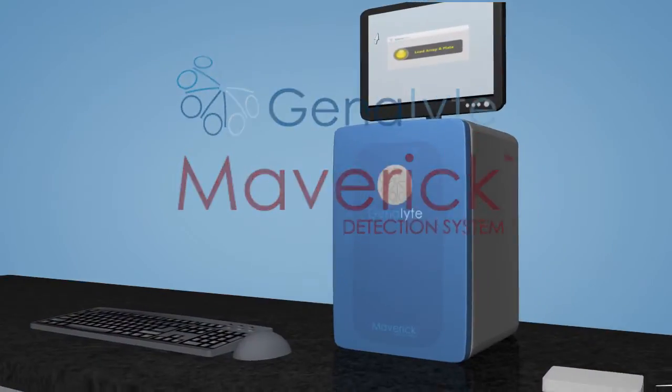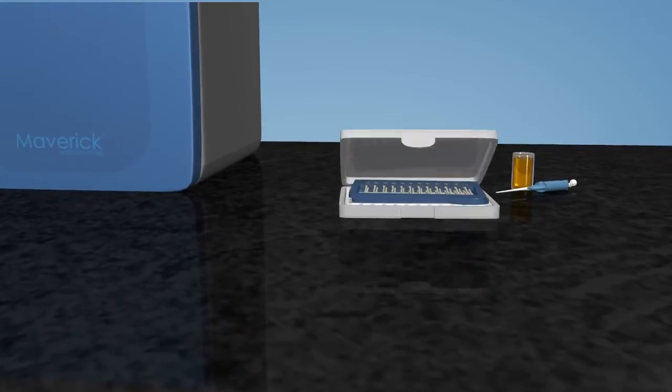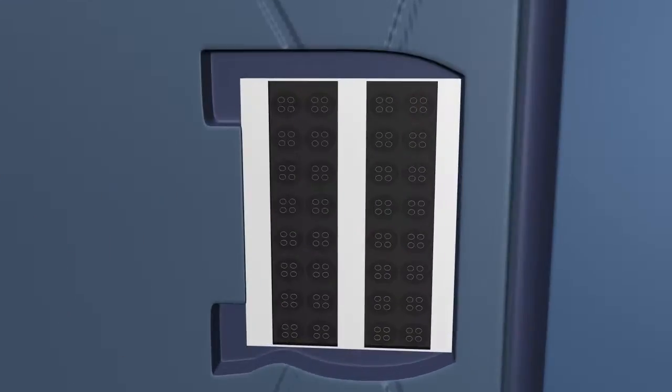The Maverick is an automated detection system for multiplex binding assays which consists of hardware, software and consumables.